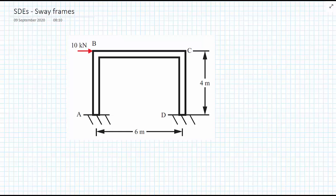In this video we're going to use the slope deflection equations to solve a problem that involves a sway frame. In the diagram we have a frame structure, a single bay ABCD. The bay is of width six meters and of height four meters, and at the top left corner B we've applied a 10 kilonewton point load.